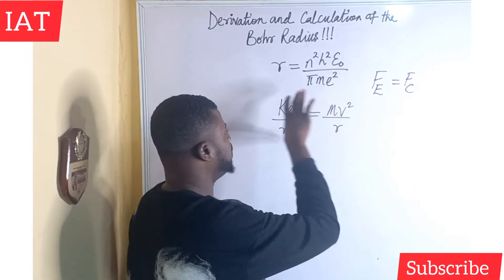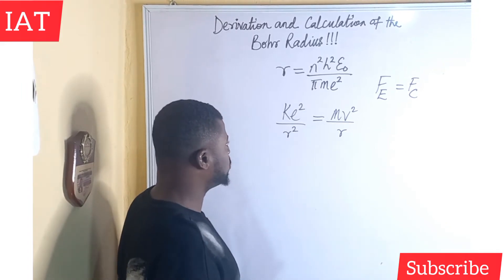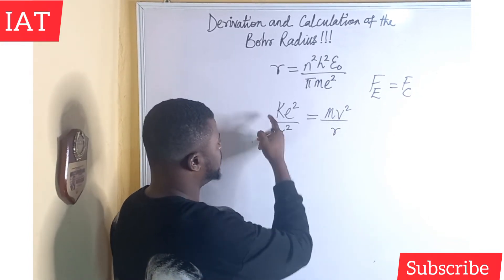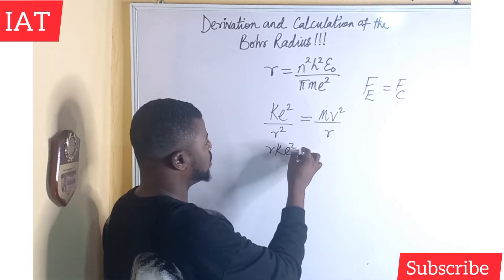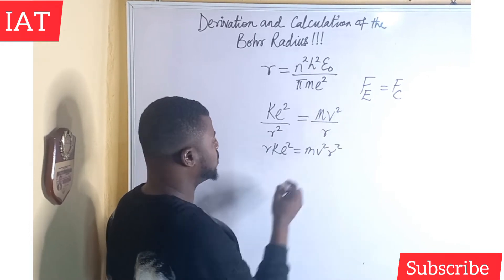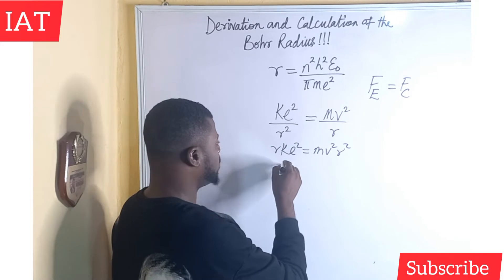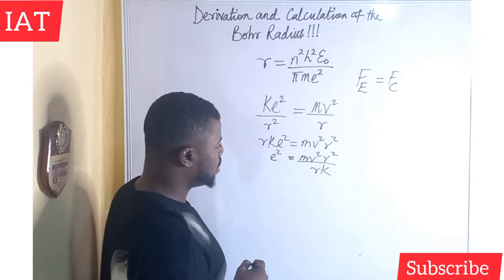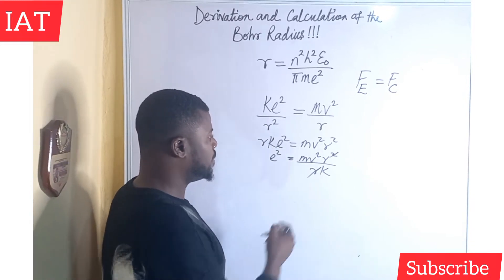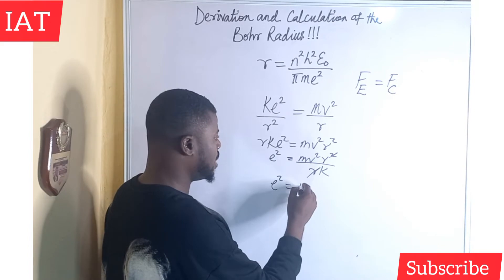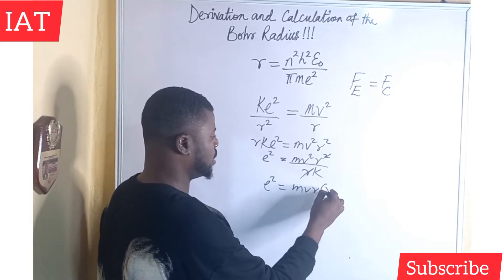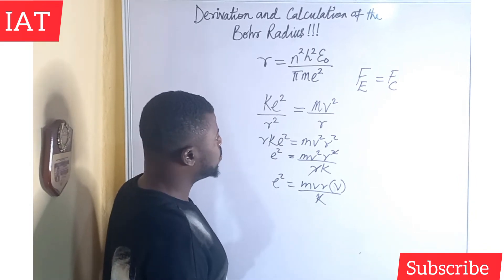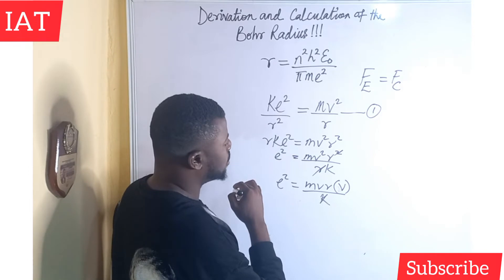Since the centripetal force has to balance the Coulombic force, we can make e squared the subject of the relation. We cross multiply to get k e squared equal to m v squared r. Dividing both sides by r and k, we have e squared equal to m v squared r over k, which simplifies so that one r cancels, giving us e squared equal to m v r times v over k. We number this as Equation 2.